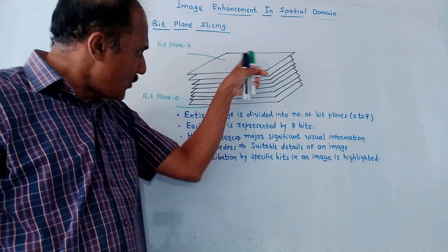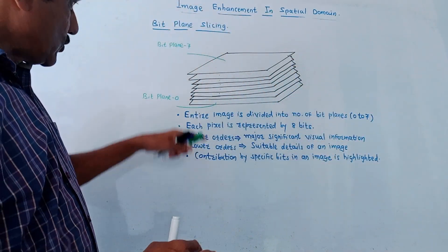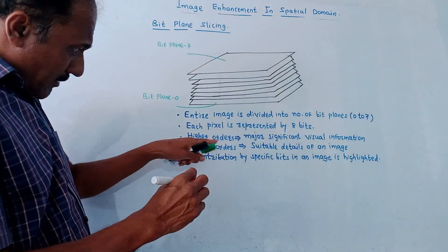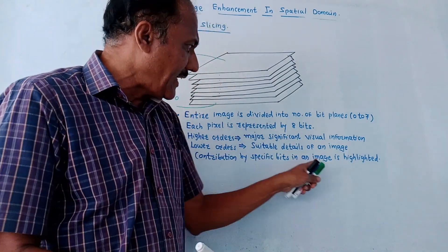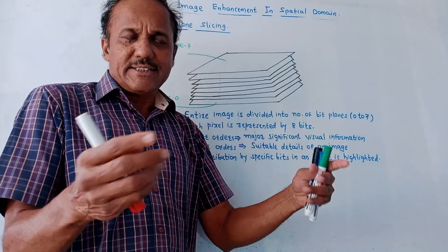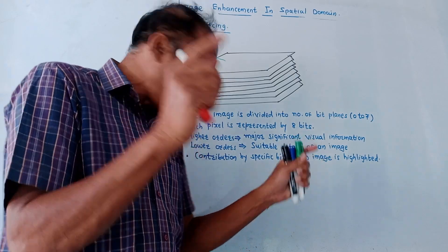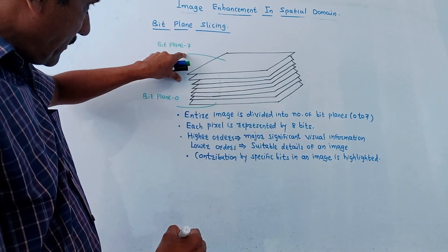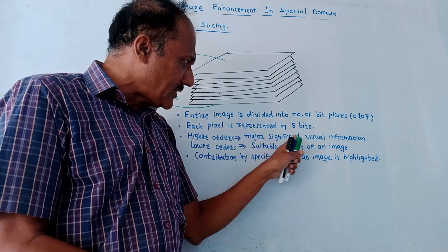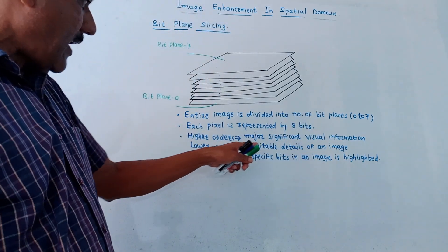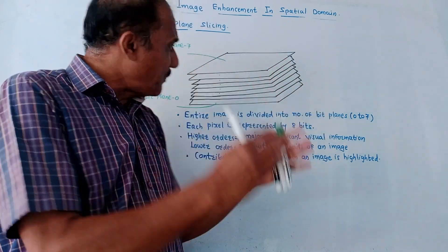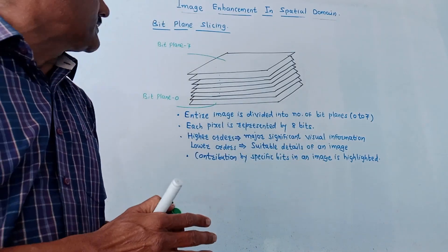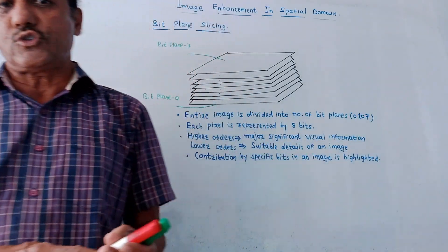The last technique is bit plane slicing. The entire image is divided into bit planes — bit plane 0 to bit plane 7, using 8 bit planes total. Higher-order bit planes (7, 6, 5, and 4) usually give the major significant visual information, while lower-order bit planes provide finer details. This technique is used to analyze and distinguish contributions made by specific bits in an image, helping to address differences in brightness and contrast.